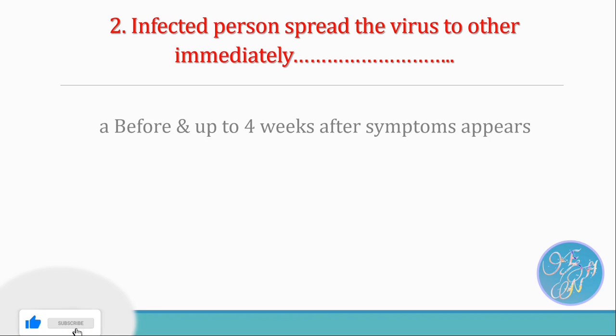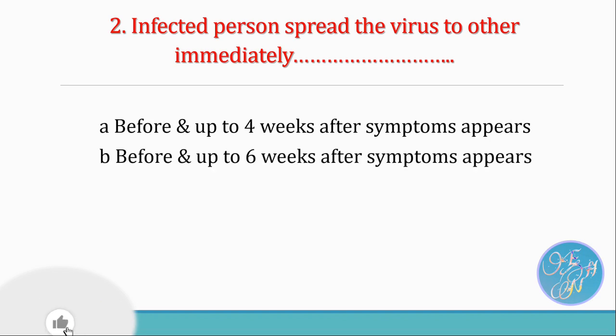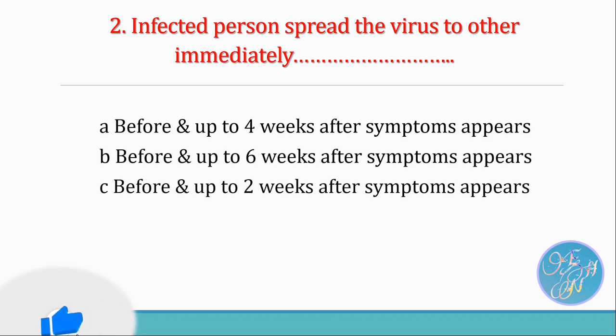Question 3: What is the specific treatment for paralytic polio? Option 1: antiviral treatment. Option 2: surgery. Option 3: vaccination. Option 4: no specific treatment available now.